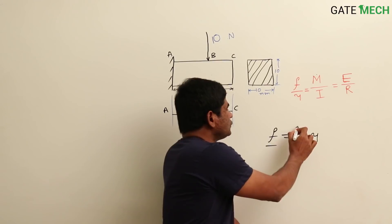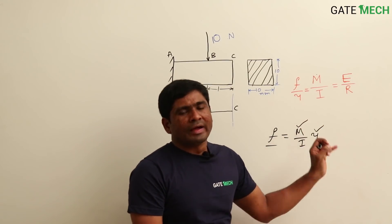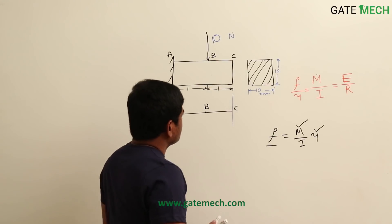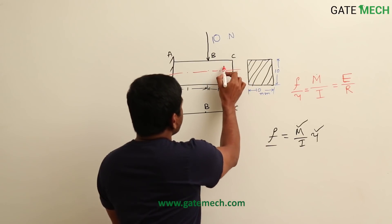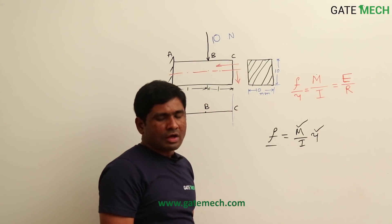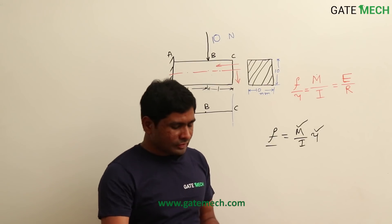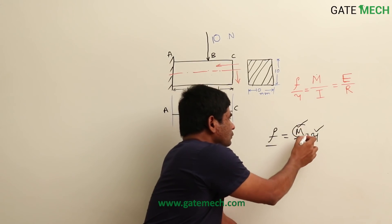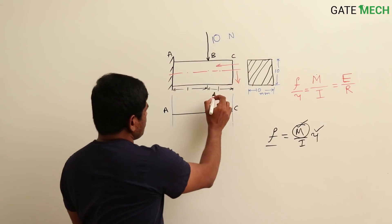Since I is constant here, stress depends either on the resisting moment M or on y — the distance of the fiber from the neutral axis. The stress changes along the cross-section depth and also along the length of the beam. We need to see how bending stress is changing along the length, and bending stress depends on the bending moment as you move along the length.